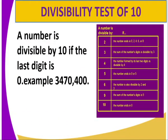We can look at the divisibility test of 10. When is a number divisible by 10? A number is divisible by 10 if the last digit is 0. You can have all the integers, all the counting numbers given, but what you are interested in is the last digit. So you ask yourself: is the last digit 0? If the last digit is 0, you say that automatically the number is divisible by 10. For example, the number 34,704,000 — is it divisible by 10? Yes, because the last digit is 0.